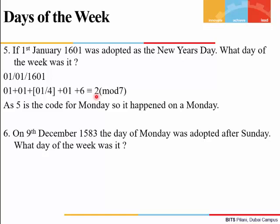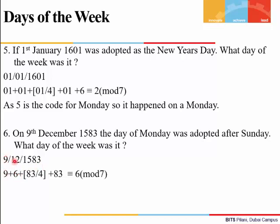Example 6: On 9th December 1583, Monday was adopted after Sunday as a day of the week. Here d = 9, month is December so m = 6, y = 83, ⌊83/4⌋, and correction c = 0 (date is in 1583, after 15 Oct 1582, so no correction). The result is congruent to 6 mod 7, so it was a Friday.